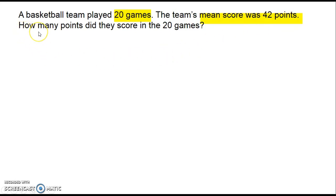And we want to find out how many points they scored in total. So this time we want to calculate the total. Fill in the information you know. Put x for the value you don't know. Multiply both sides by 20. The total score was 840.